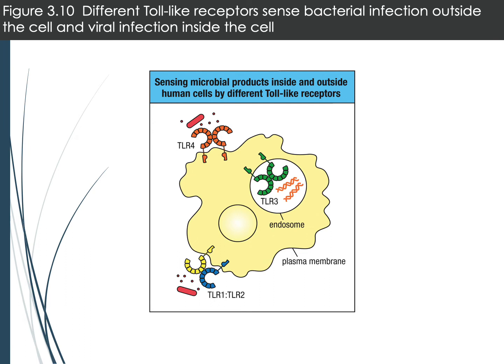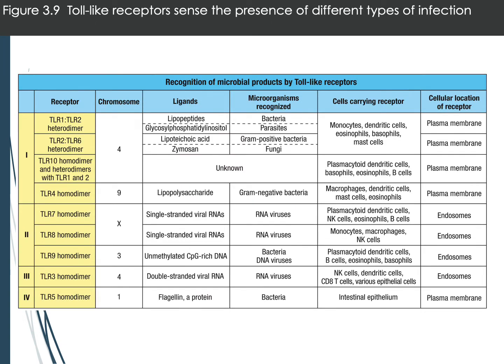Each toll-like receptor is a dimer — some are homodimers (both chains the same molecule, e.g., TLR4 and TLR3) and some are heterodimers (e.g., TLR1 and TLR2). A table shows the different TLR dimers and their corresponding ligands. In the journal club paper, macrophages are fed different ligands to see whether they get activated, indicating which TLR mediated the response.